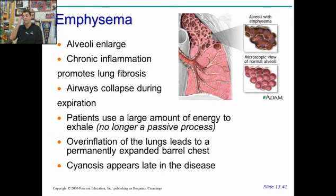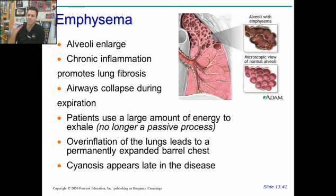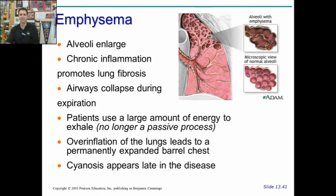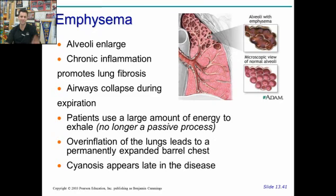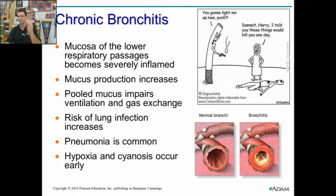Emphysema is when you get enlarged alveoli that have difficulty with gas exchange. Instead of many small alveoli, you have one giant alveolus, making gas exchange more difficult. This chronic inflammation causes airways to collapse every time you expire. Breathing is really labored and no longer passive — patients have to really force it. As a result of constantly forcing it and overinflation of the lungs, they eventually develop a barrel chest, where the chest sticks out. Very late in the disease, patients may become cyanotic. They often have to be on supplemental oxygen.